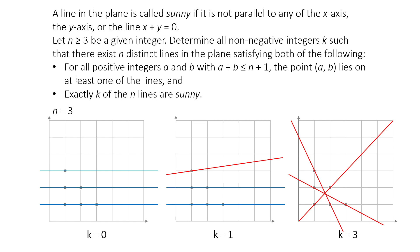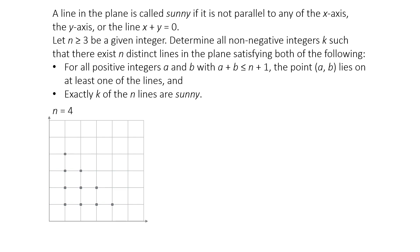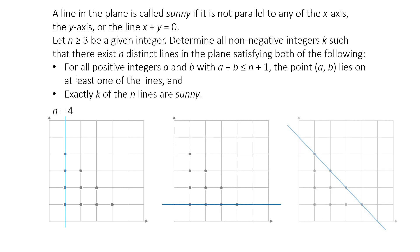Let's consider n equals 4. We have four lines and ten points in total. Now, in this setup, there are three very important non-sunny lines. The vertical line x equals 1, the horizontal line y equals 1, and the diagonal line x plus y equals 5.